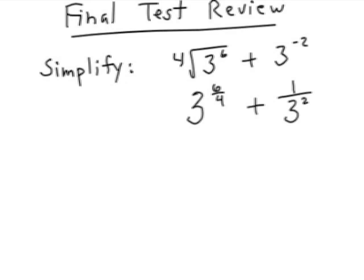Can we simplify 3 to the 6 fourths power? Yes, of course. So it'd be 3 to the 3 halves power plus 1 over 9 if we multiply out 3 squared. How do you write 3 halves as a power? Well, we're going to convert it back into a radical symbol. That means the square root of 3 to the 3rd power.